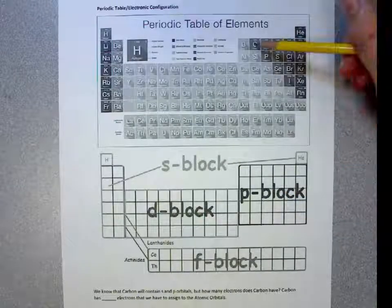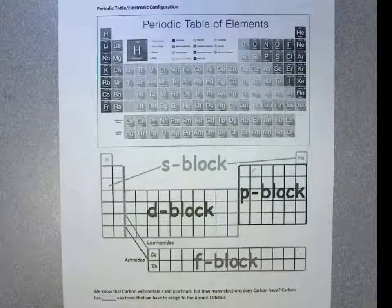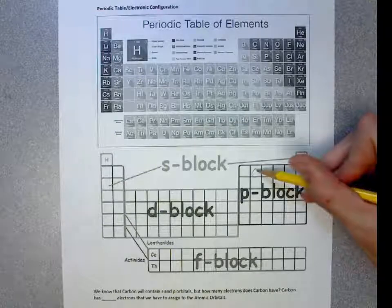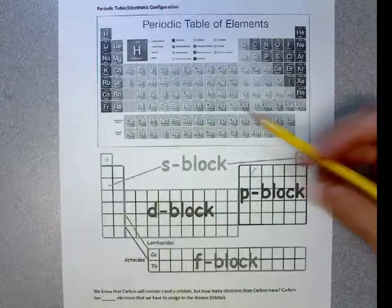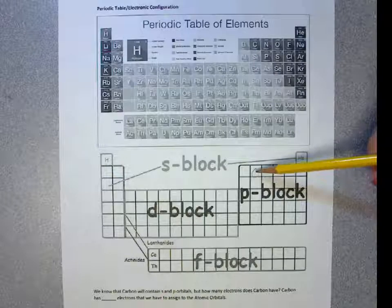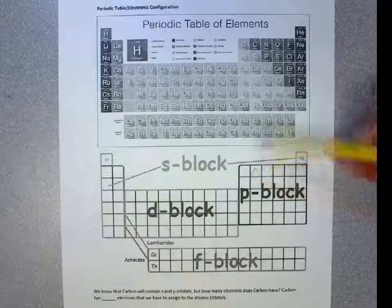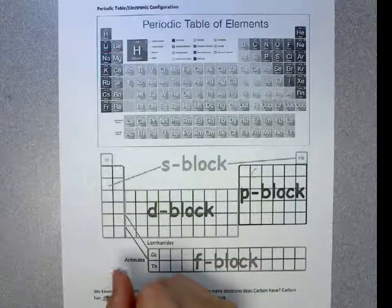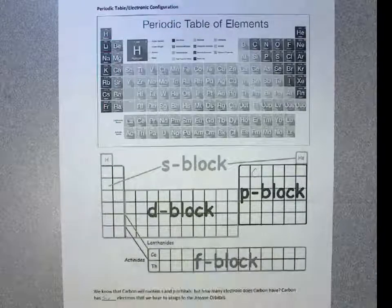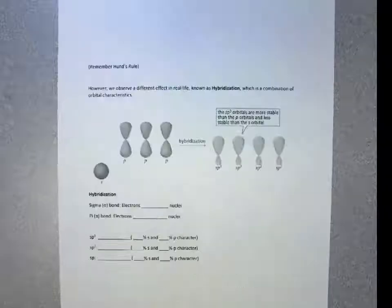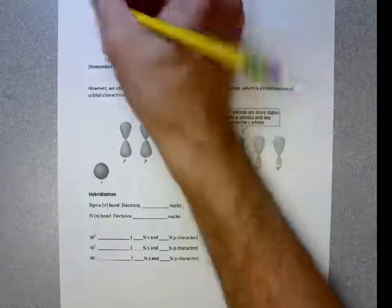For example, let's do carbon. Carbon is going to exist here. We're going to have S and P orbitals that exist. And we know that carbon is going to have six electrons that we will have to assign.